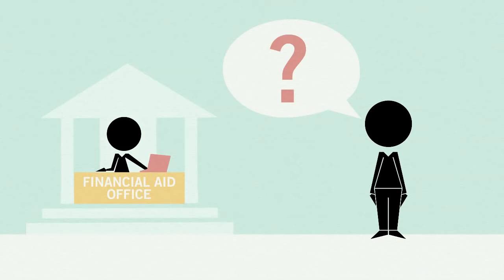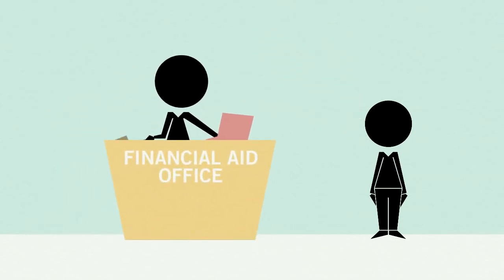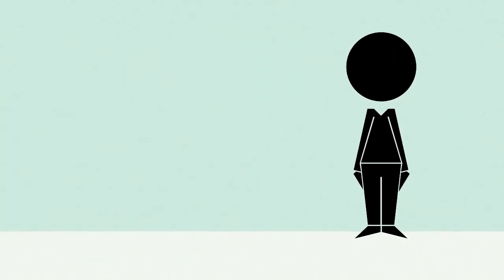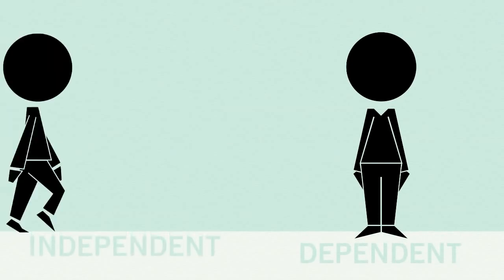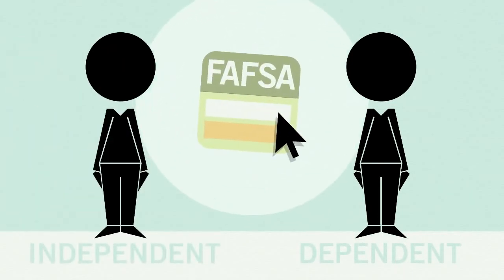If you have any other questions regarding financial aid, your college or career school will be able to answer them for you. And, if appropriate, make a decision about your dependency status. Their decision is final and cannot be appealed to the U.S. Department of Education. No matter your dependency status, make sure to complete the FAFSA to find out what federal money you can get for college or career school.